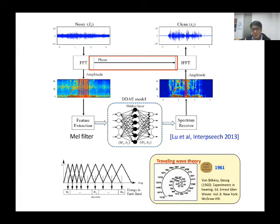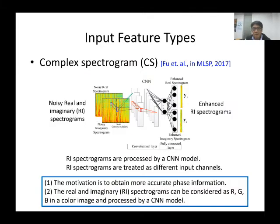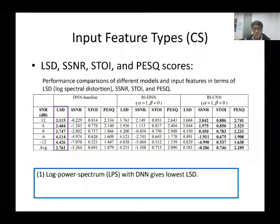The idea of short-time Fourier transform and Mel filterbanks is based on our hearing system for human perception. This may not be optimal when using neural network models for speech enhancement. The phase information is inaccurate, and many studies have shown that phase information may affect overall speech quality. In 2017, we proposed using complex spectral features as input for the speech enhancement model. We use a CNN to combine the real and imaginary (RI) spectrograms to obtain enhanced RI spectrograms.